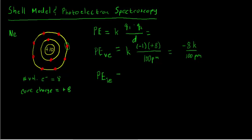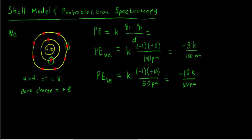Now let's calculate the potential energy of an inner electron, PE_IE. That's K times minus one — the charge on that inner electron. There are no other electrons in front of it shielding the nucleus, so we use the full nuclear charge of plus 10. And it's much closer to the nucleus. We don't know exactly how much closer, so let's put in a number smaller than 100 — say 50 picometers. So we've got negative 10K divided by 50 picometers. You can see that the potential energy for the valence electron is higher — closer to zero — than the potential energy for the inner electron.